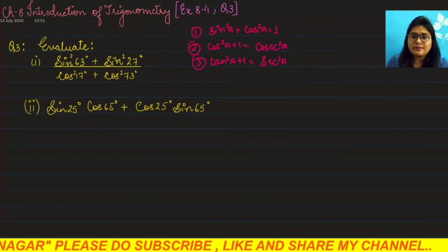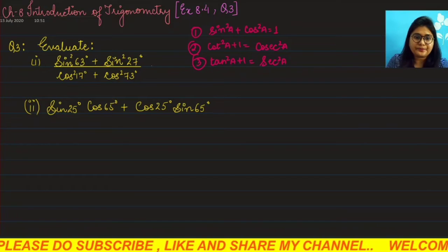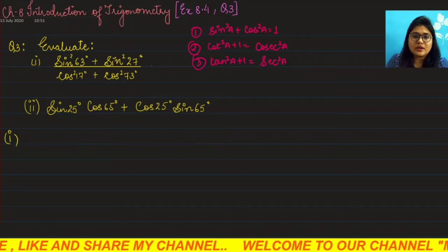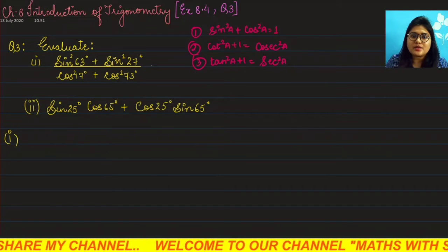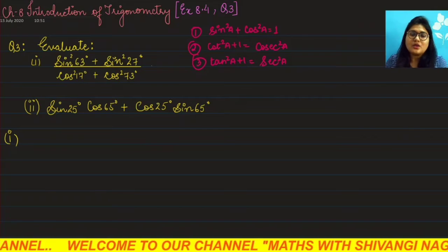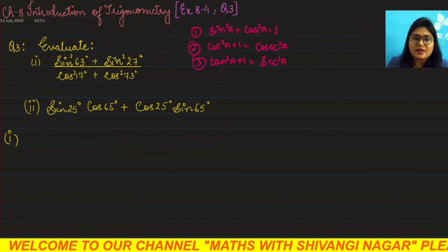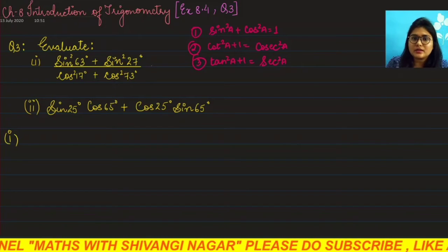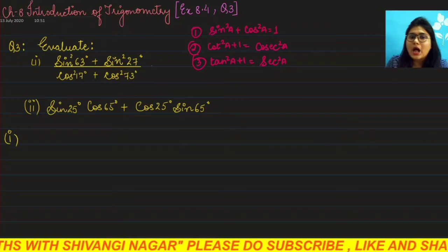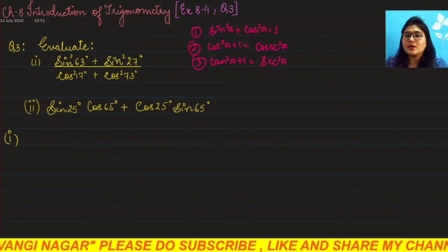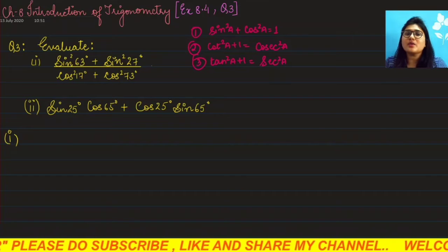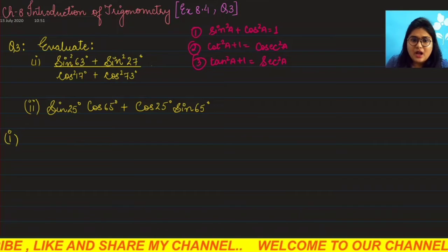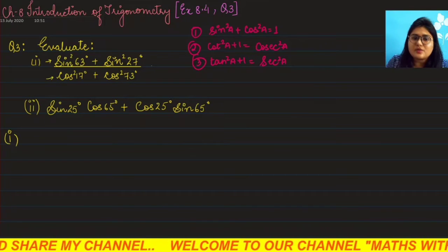Question number 1, the first part says: sin²63° + sin²27° divided by cos²17° + cos²73°. So if you look here, 63 and 27 are complementary angles. I am converting in the numerator part and the denominator.